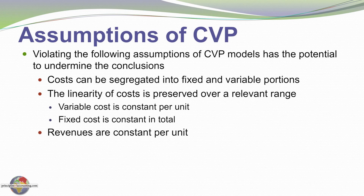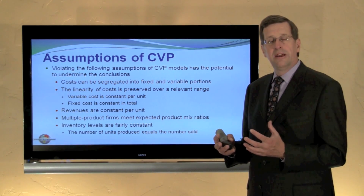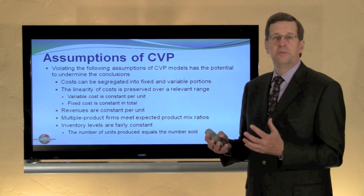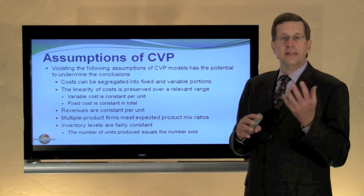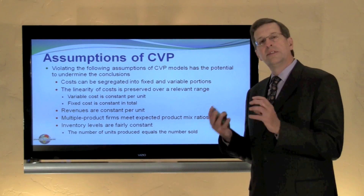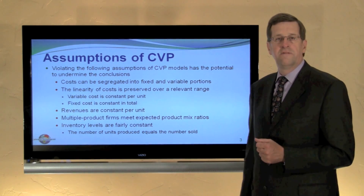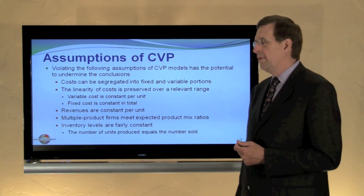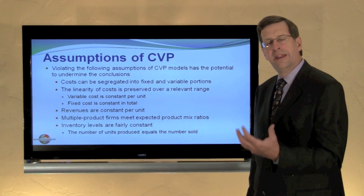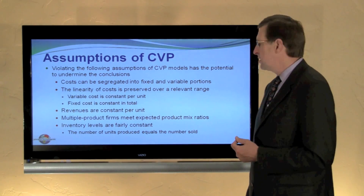A third assumption is that revenues per unit need to be constant. Simply put, if we're doing cost volume profit analysis by looking at the contribution margin — sales minus variable cost — then we need to know that sales are constant per unit and variable costs are constant per unit, and we also need to know that the fixed cost pool is an accurate reflection of the costs that will be incurred. If those are violated then our algebra is simply wrong and we'll get erroneous conclusions.